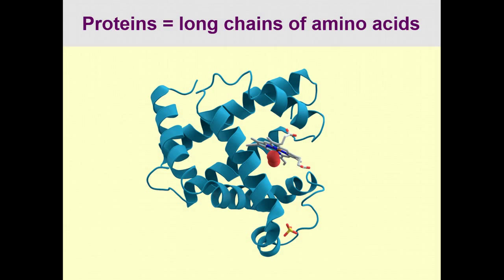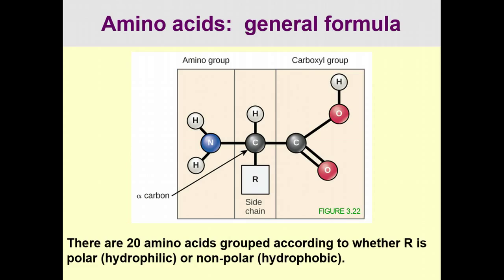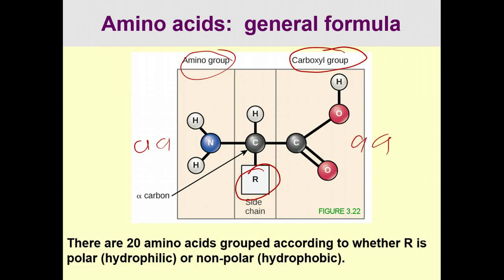This cartoon model shows different amino acids that form different shapes inside the protein. Amino acids have a general formula. The backbone of every amino acid includes a nitrogen in the amino group, a side chain referred to as R, and a carboxyl group on the right. In a protein, another amino acid would be on each side, and the side chain is different in each amino acid.